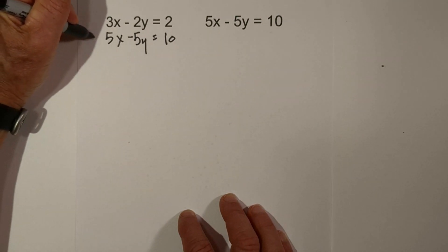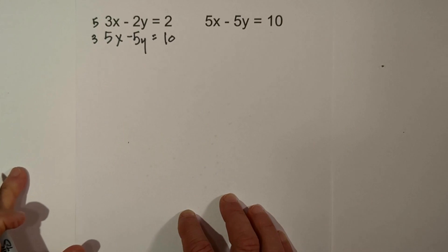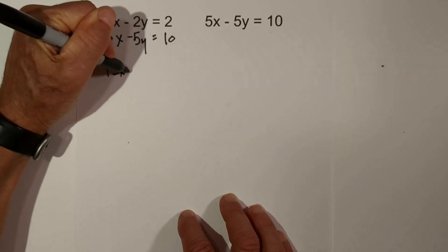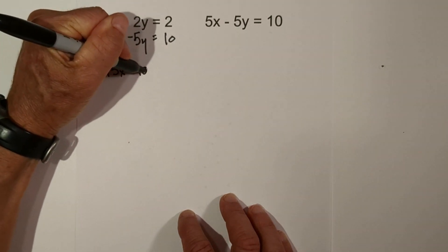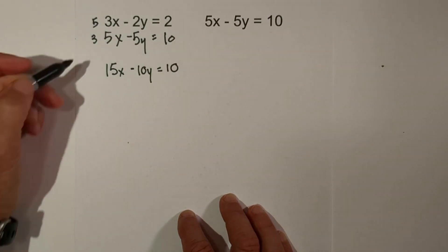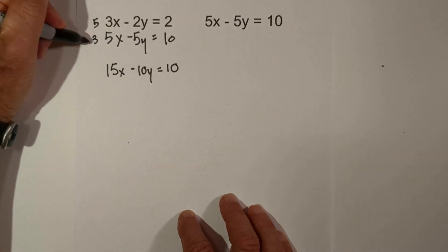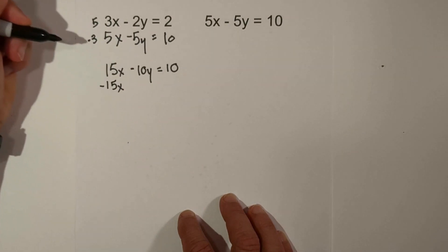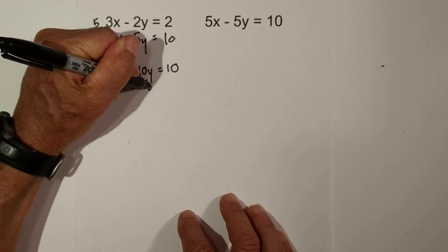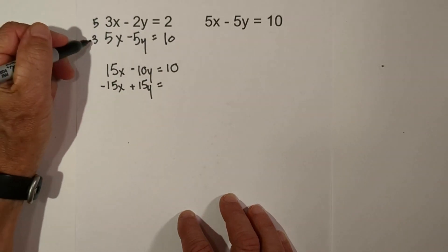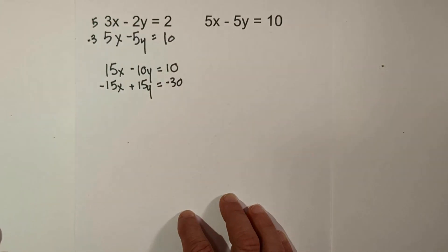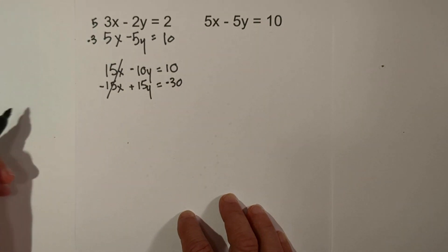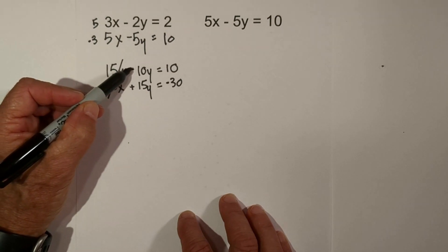In order to cancel out the x terms, we need to multiply the first equation by 5 and the second equation by negative 3. Multiplying gives us: 15x minus 10y equals 10, and negative 15x plus 15y equals negative 30.